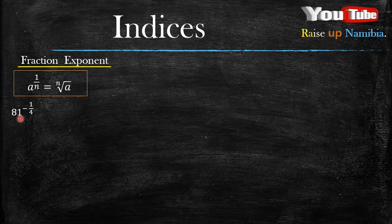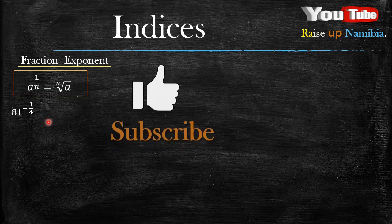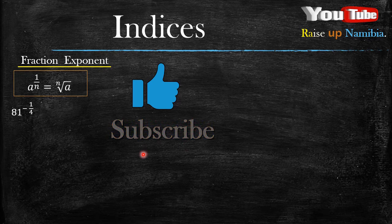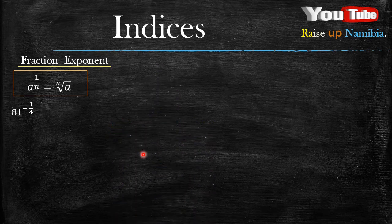How about when you have an exponent that is a negative fraction? How do you go about it? If you are finding this video informative, please do make that like button blue, and if your subscribe button still looks like this, please make it darker by subscribing. Now let's get into this example.